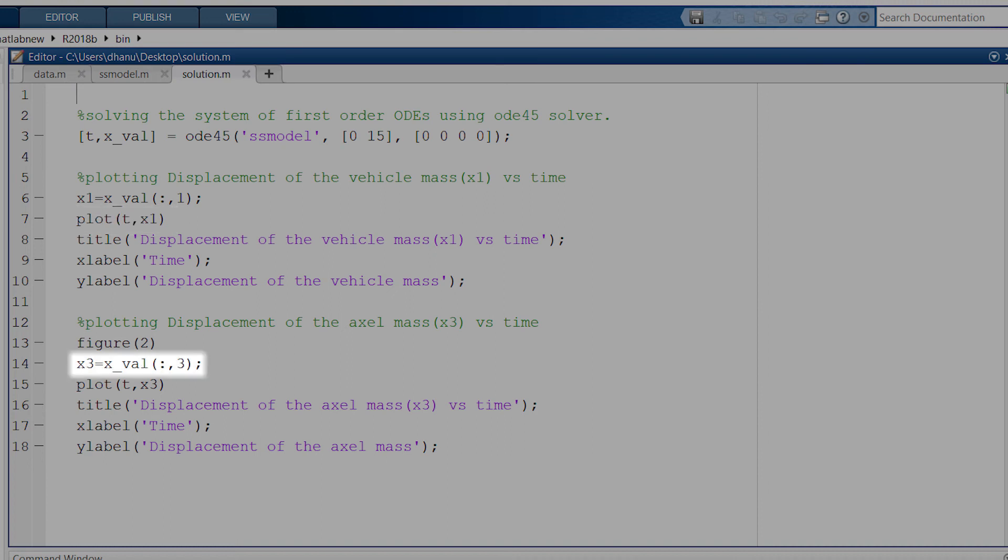In this x3 variable, I have stored the third column of this x_val matrix which contains the values of our state variable x3 corresponding to the time values in t. This x3 state variable represents the displacement of m2. In these following lines, I have plotted the graph of x3 versus time.